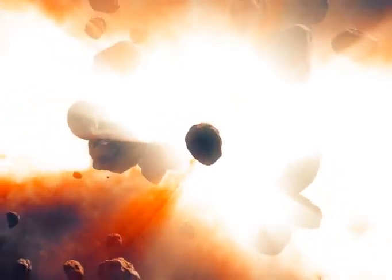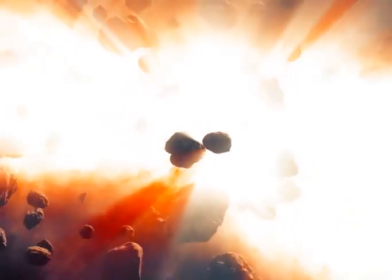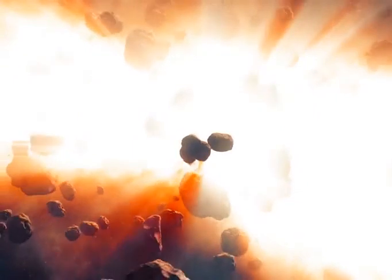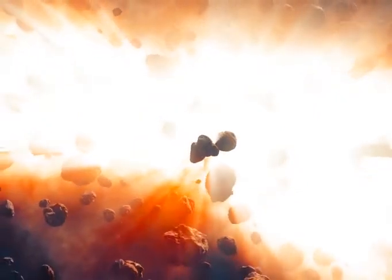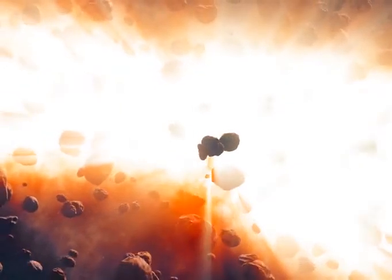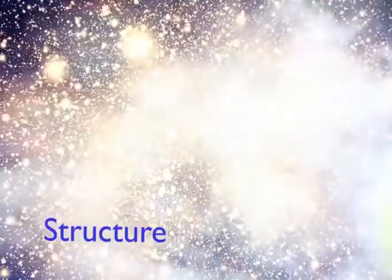In other cases, planets did not form. The asteroid belt, made of bits and pieces of the early solar system, could never quite come together into a planet. Other smaller leftover pieces became asteroids, comets, meteorites, and small irregular moons.